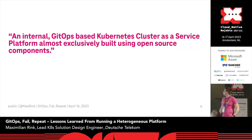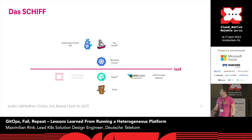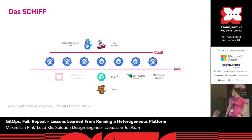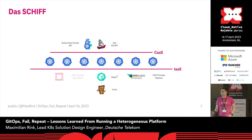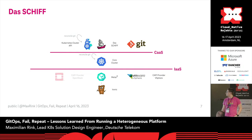What is our platform? It's an internal GitOps-based Kubernetes cluster-as-a-service platform, almost exclusively built using open-source components. We're using Cluster API under the hood. We have a lot of clusters because we do multi-tenancy on a per-cluster basis. We use GitOps for everything — we don't do many manual interventions at all. We have clusters that do all the management, and we have edge clusters.